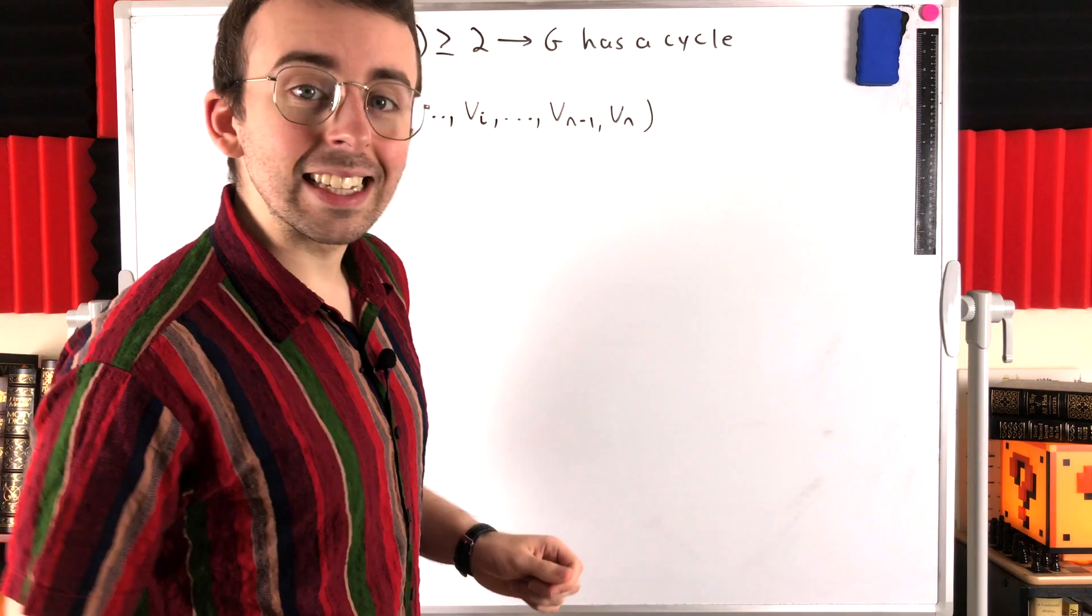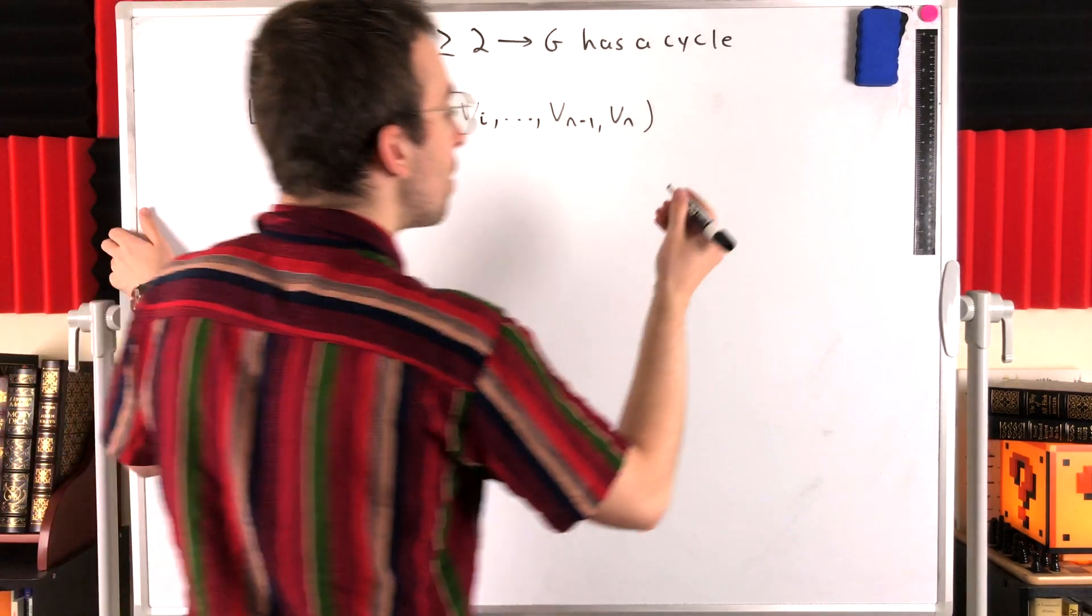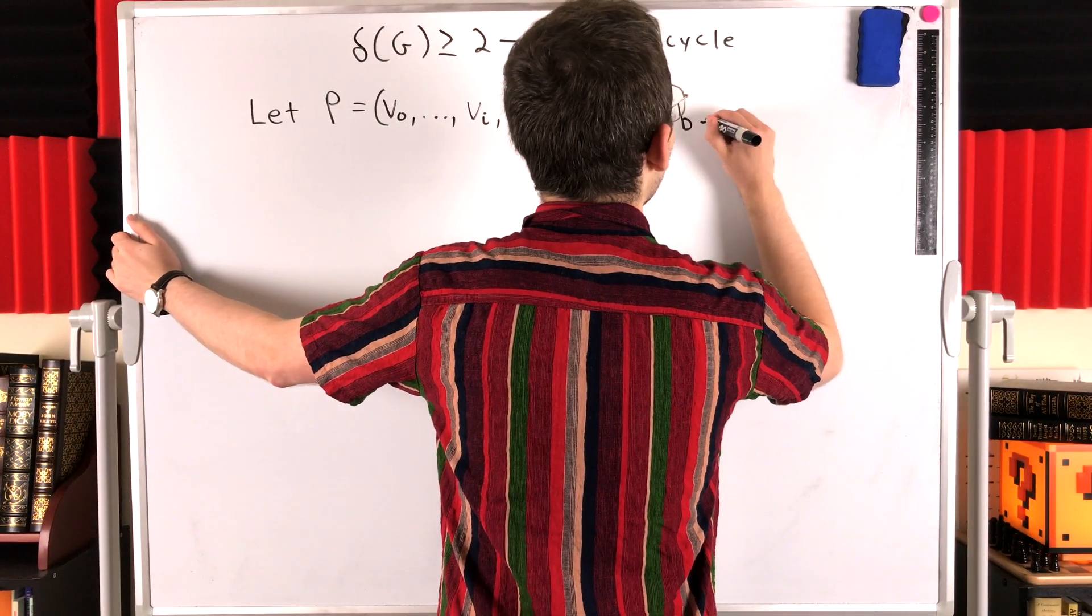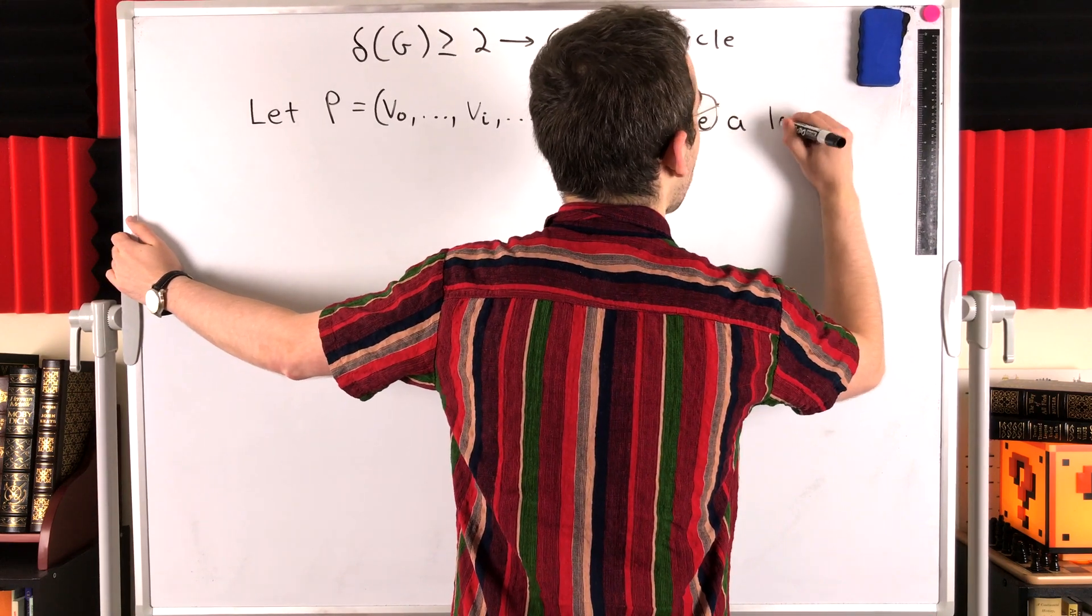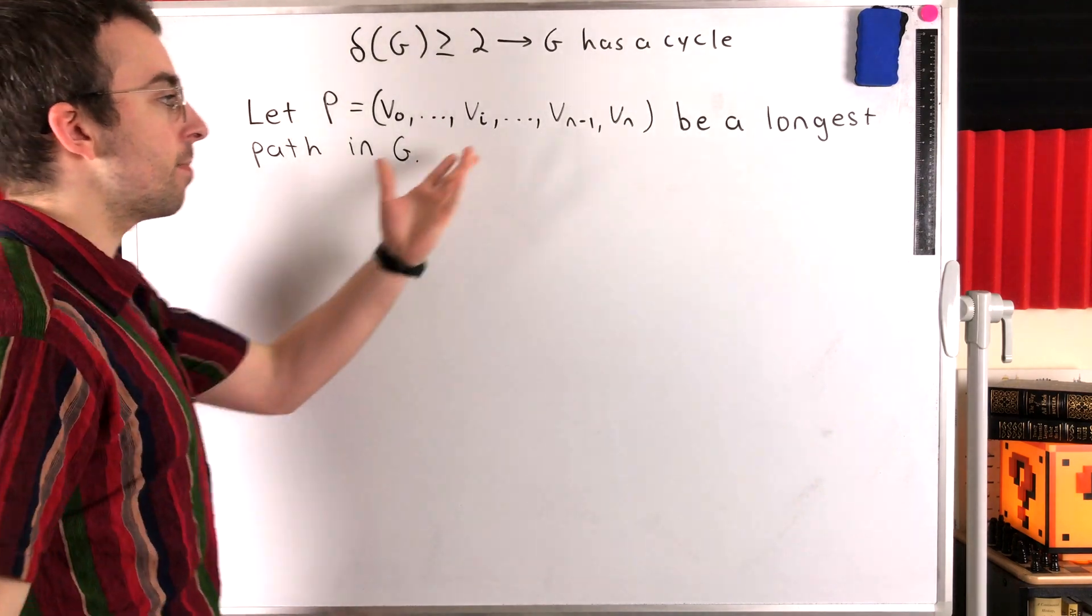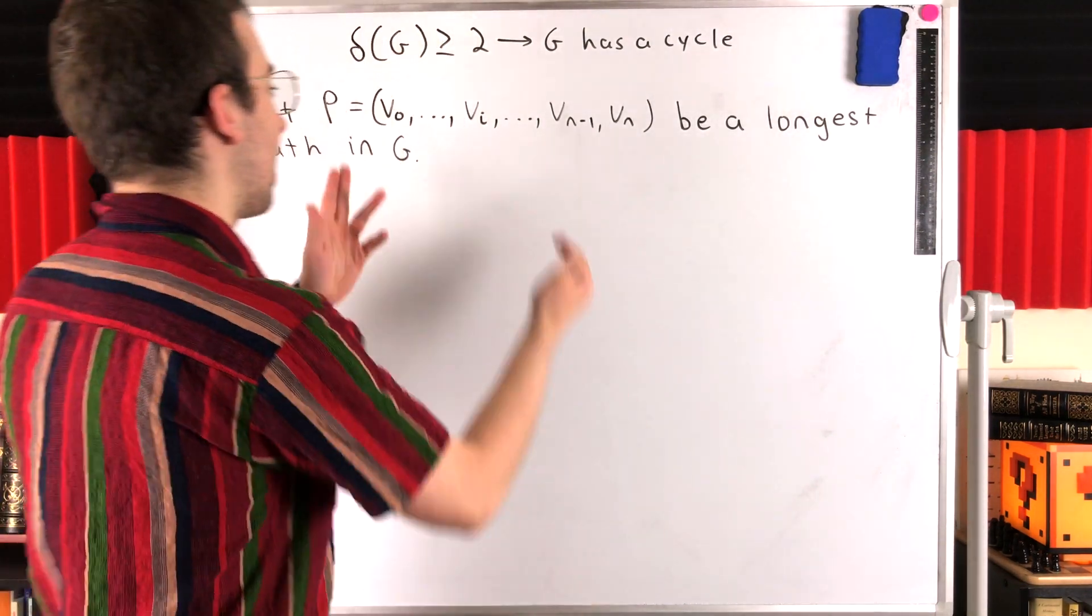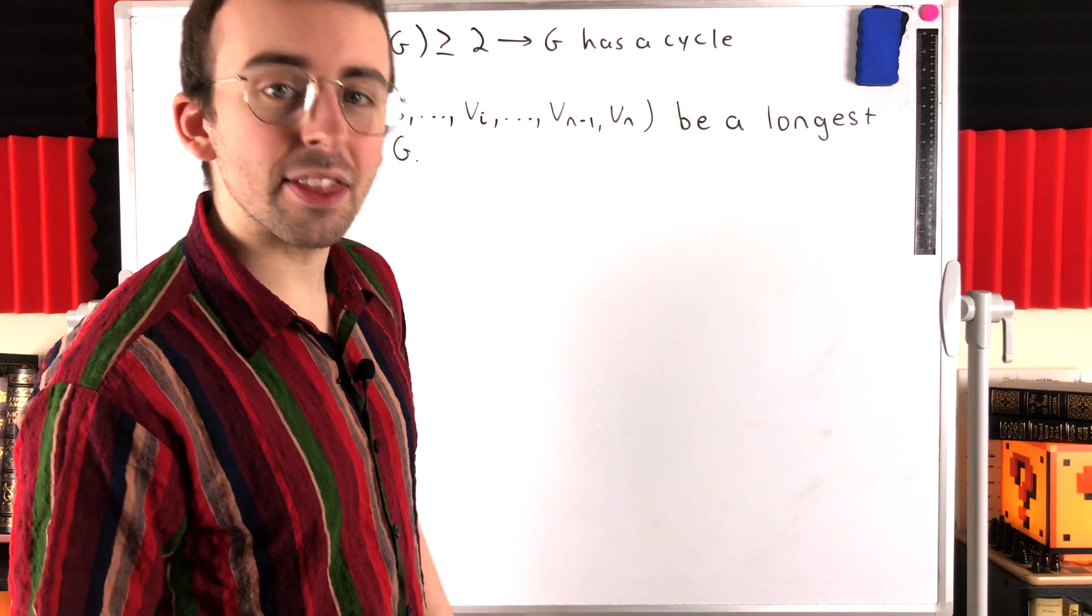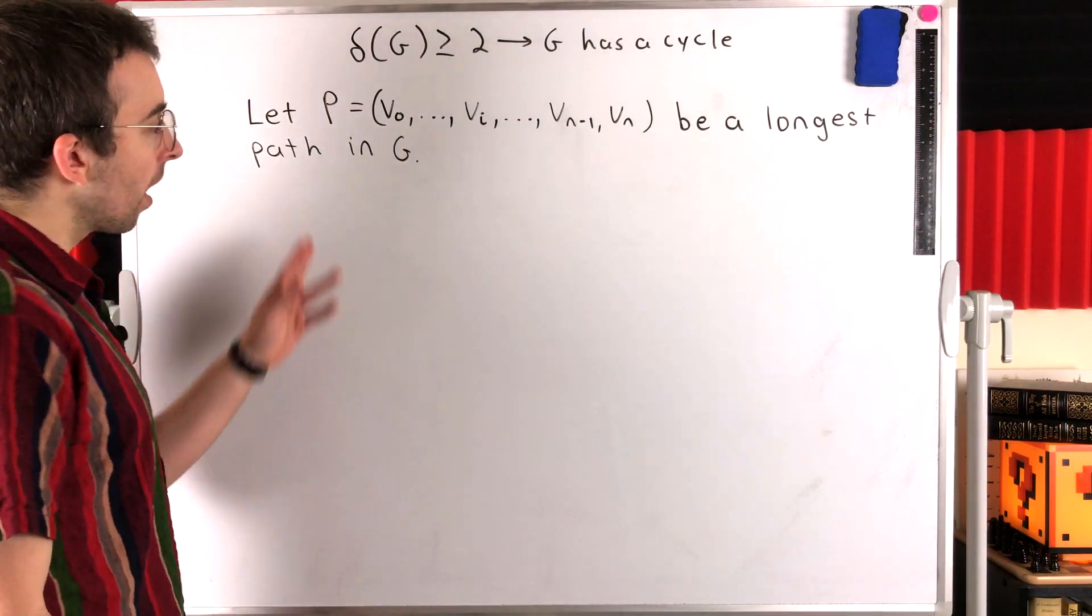We don't know exactly how long P is, but it doesn't matter. All that matters is that P is a longest path in our graph G. There may be other paths in G that have this maximum length, but that doesn't matter. We're just taking some path of maximum length in G.